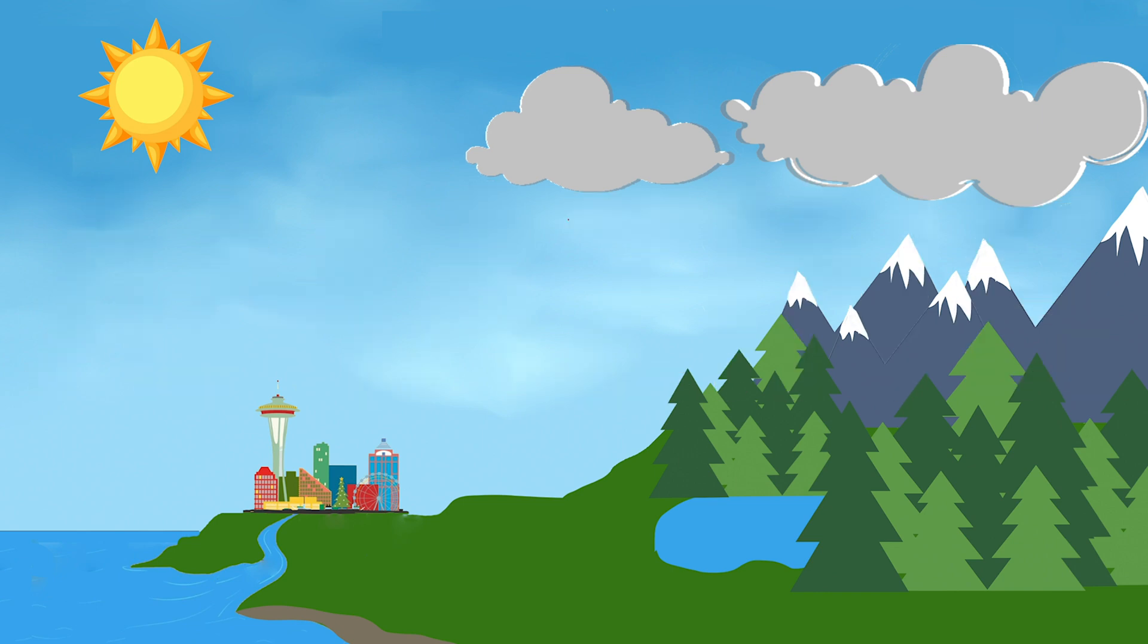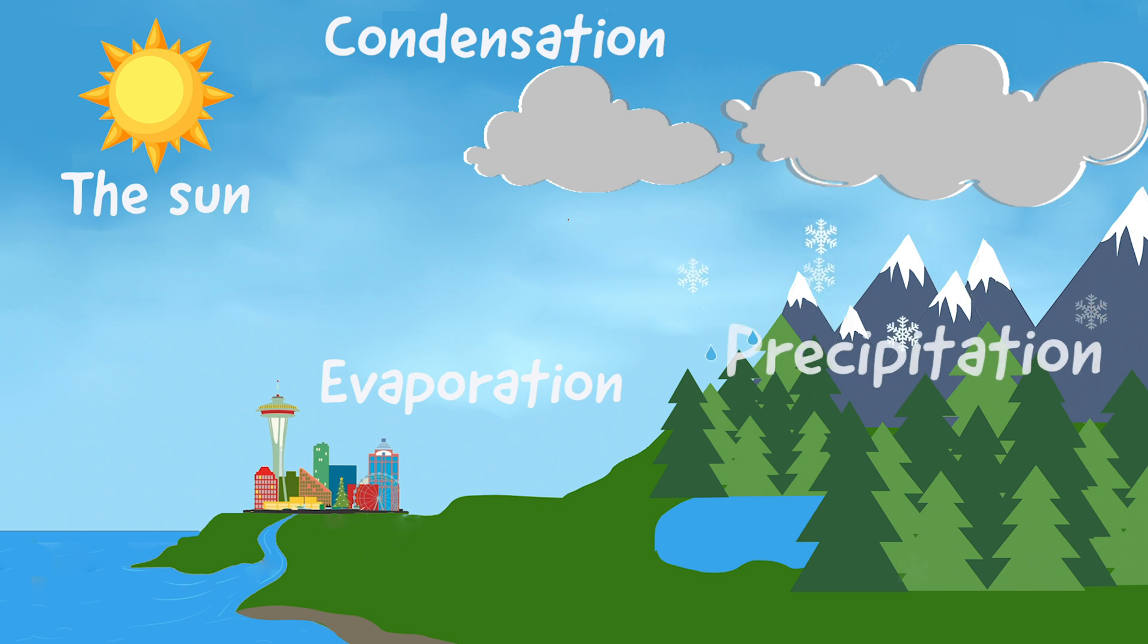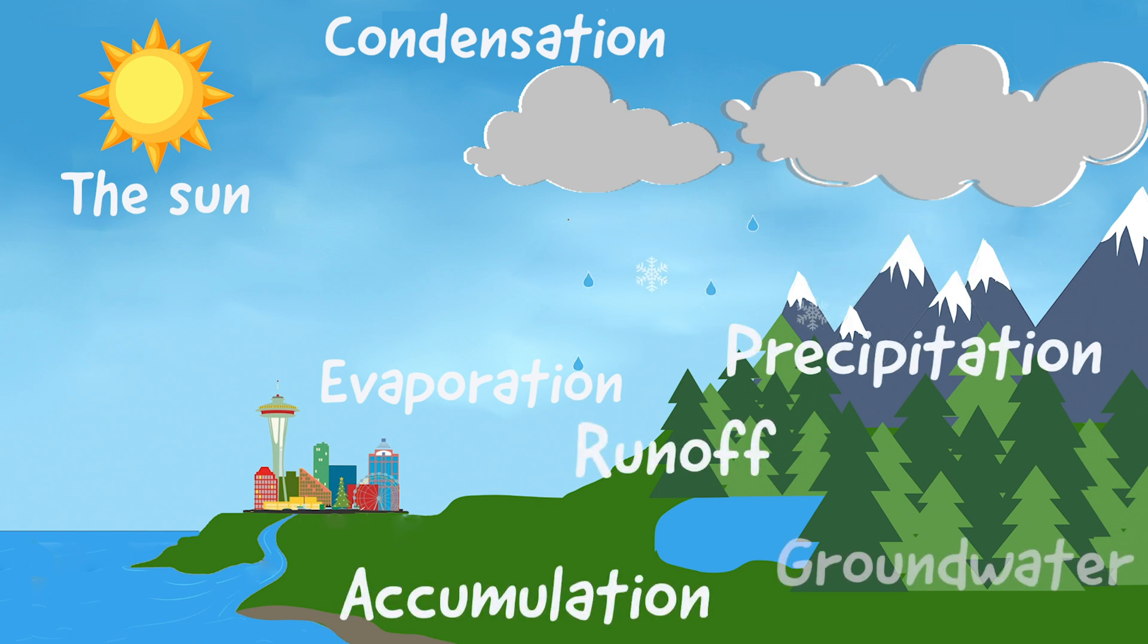Do you remember all parts of the water cycle we just talked about? There's sun, evaporation, condensation, precipitation, runoff, accumulation, and groundwater.